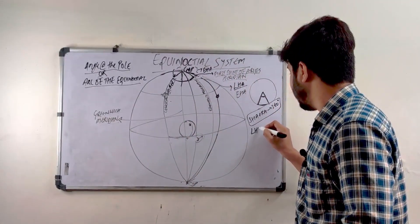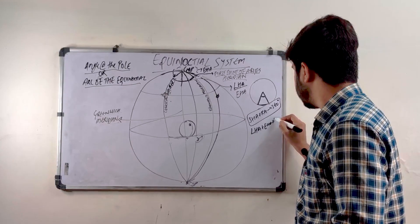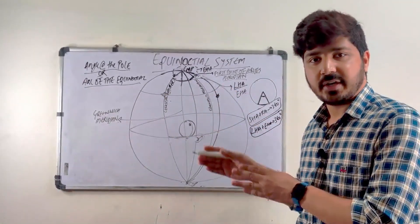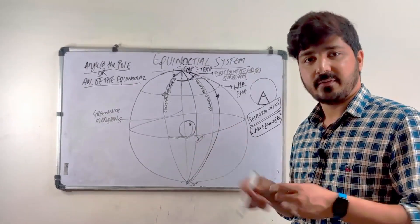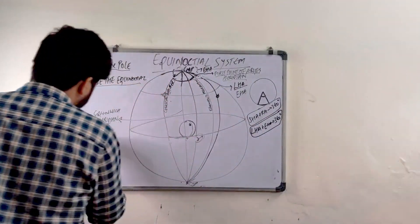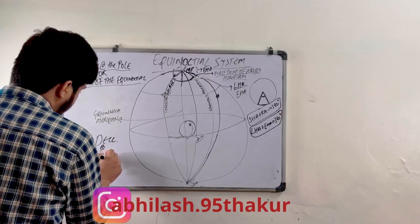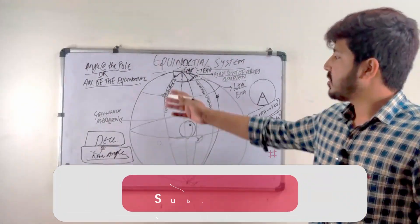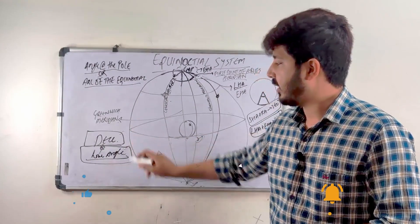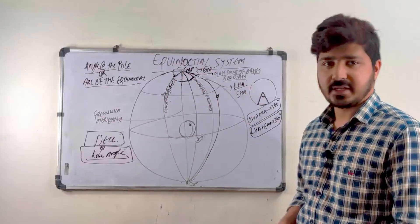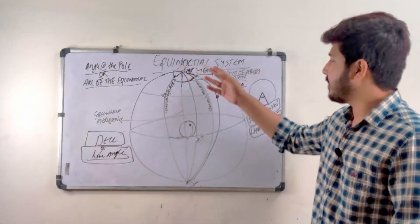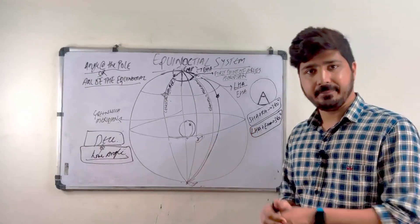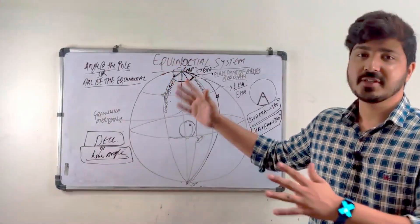LHA plus EHA equals 360 degrees. If you know the declination of the body and any hour angle, you know where the body is on the celestial sphere. For coordination you need one declination and one hour angle — just like you need latitude and longitude on earth for a position. You must have observed that in all definitions the celestial body meridian stays constant; only the reference point changes. For SHA it is the First Point of Aries, for GHA it is the Greenwich meridian, and for LHA it is the observer's meridian.